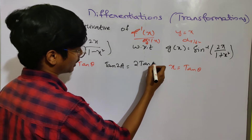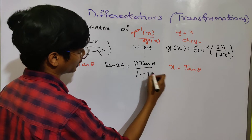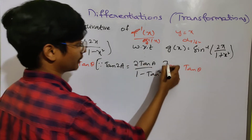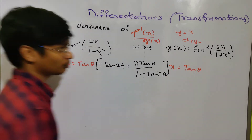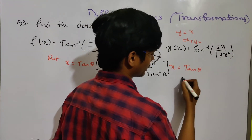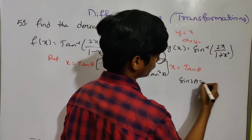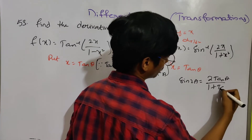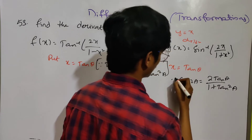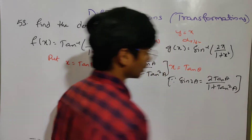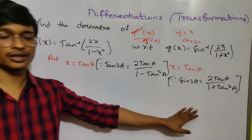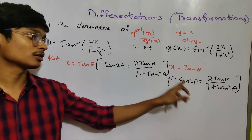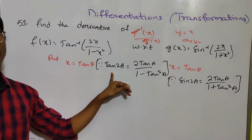The formula for tan 2a is 2 tan a by 1 minus tan squared a. The sin 2a formula in terms of tan is 2 tan a by 1 plus tan squared a. If the numerators are the same, the difference is the sign: sin 2a uses plus and tan 2a uses minus.